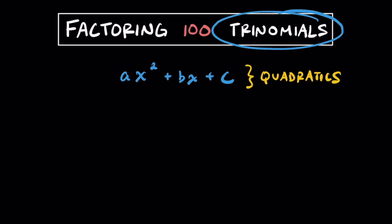In each of these expressions, you're going to notice that the degree of each polynomial is going to equal 2. This variable a is just representing our leading coefficient and is going to be a number. b is also going to be a coefficient and another number, as well as c over here, which is our constant term — that's going to represent a third different number.